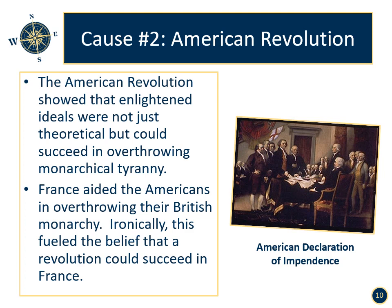Cause number two: the American Revolution. The American Revolution showed that enlightened ideals were not just theoretical, but could succeed in overthrowing monarchical tyranny. France had aided the Americans in overthrowing their British monarchy. Ironically, this fueled the belief that a revolution could succeed in France, and the French could overthrow their own monarch. The British were the arch enemies of the French. The French crown had sent supplies and soldiers to aid the Americans. Marquis de Lafayette was a famous French general who served in America.